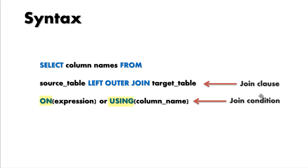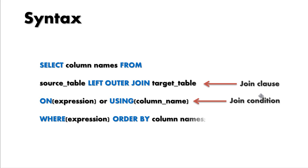These two join conditions are ON and USING. The uses of each join condition depend on certain conditional parameters — we will discuss it as we go. And at the end of the syntax we have our WHERE and ORDER BY clause. Note here: if you are using ORDER BY clause then it must be the last statement of the query.